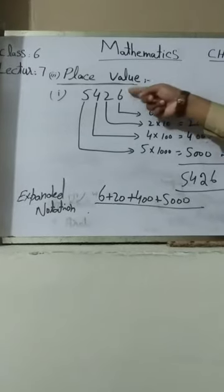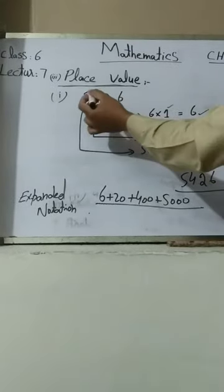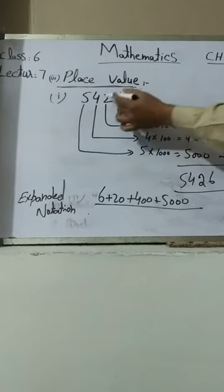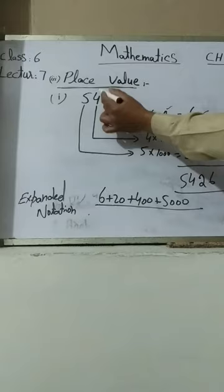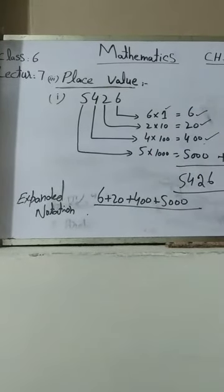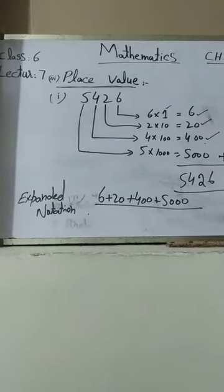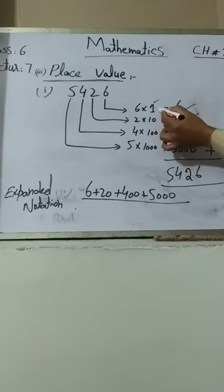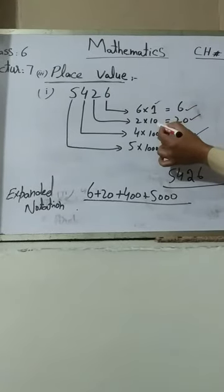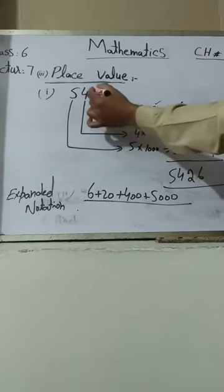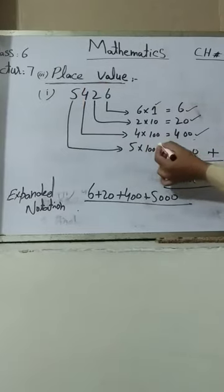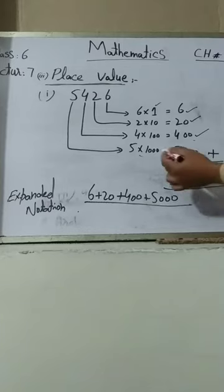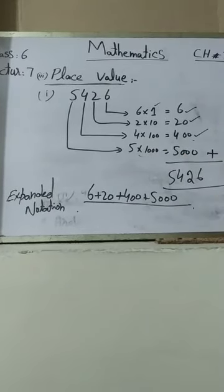To write 5,426 in expanded notation: unit place is multiplied by 1, tens place by 10, hundreds place by 100, and thousands place by 1000. So 6 is in unit place, 2 is in tens place giving 20, 4 is in hundreds place giving 400, and 5 is in thousands place giving 5,000. This gives us the expanded form: 6 plus 20 plus 400 plus 5,000.